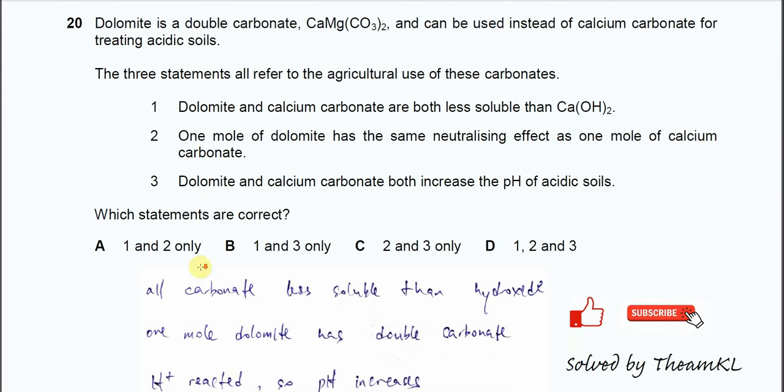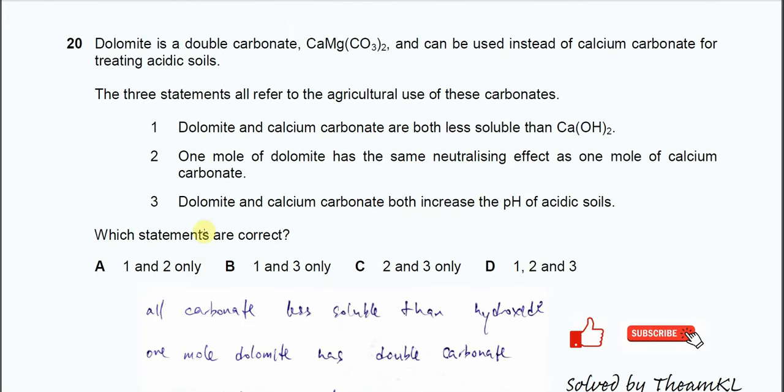For question 20, dolomite is a double carbonate, calcium magnesium carbonate, and it can be used instead of calcium carbonate for treating acidic soils. The three statements all refer to the agricultural use of these carbonates.